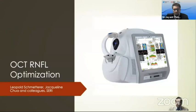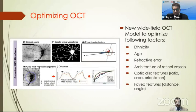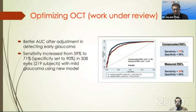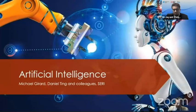Another approach is to optimize currently available technology. Leopold Schmetter, Jacqueline Chua and colleagues are looking into this. Currently, OCT-RNFL has lower discriminatory performance in early disease, potentially due to an inadequate normative database and anatomical factors such as myopia-related disc tilt and retinal vessel density. They developed software to optimize for factors like ethnicity, age, refractive error, and the distance between the fovea and optic disc. When they applied that, they found they could detect glaucoma better — their strategy rests in detecting glaucoma from currently available technology and augmenting it with better software.